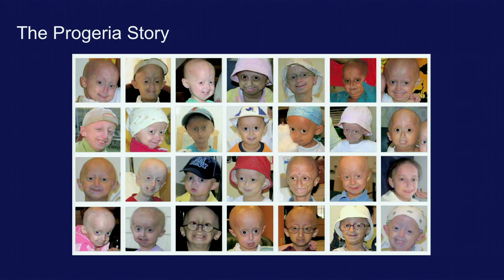The kids you see here all volunteered to be part of this — 28 of them. You can see they are a remarkable group of young people, all afflicted by this disease, all looking quite similar to each other. Instead of telling you more about it, I'm going to invite one of them — Sam Burns from Boston, who is here this morning — to come up on stage and tell us about his experience as a child affected with progeria.